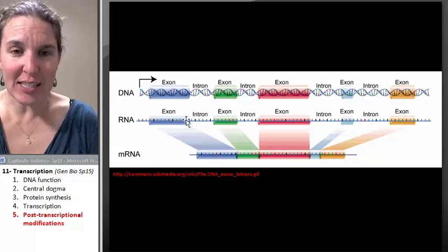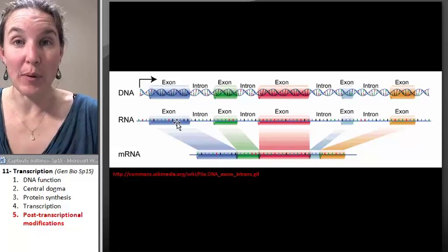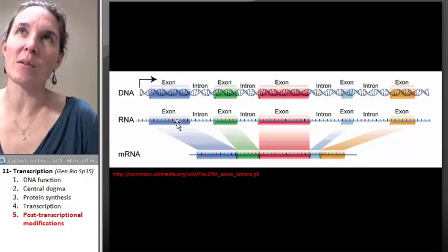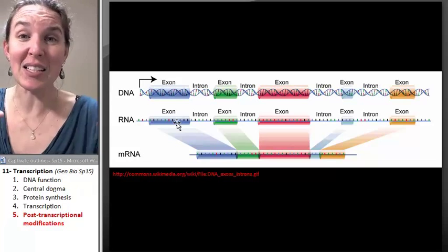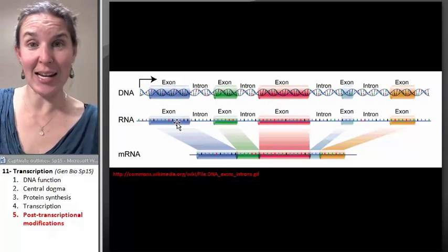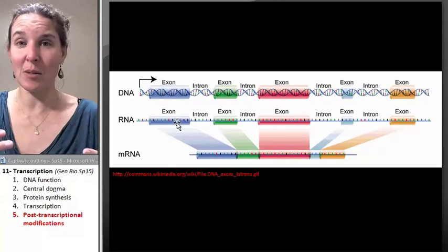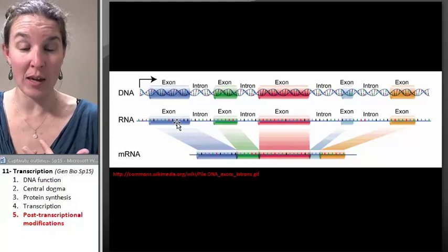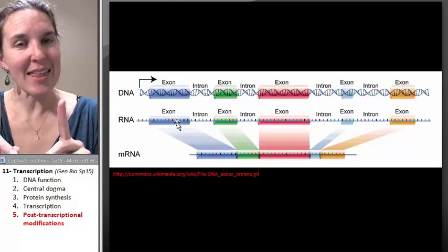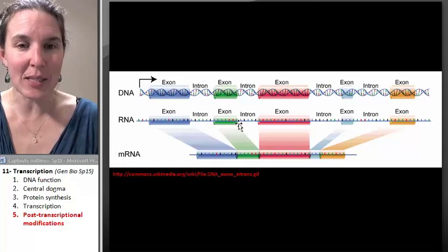And look at this. Exons are the pieces of the RNA that you keep, and that's a little bit counterintuitive to me until I think exons exit the nucleus. Introns stay in the nucleus, and they're garbage, and we're going to recycle them and make new messenger RNA with the products.